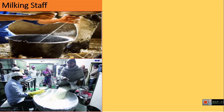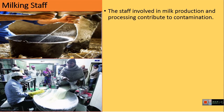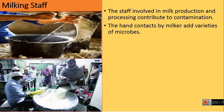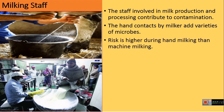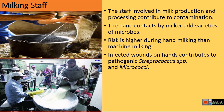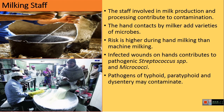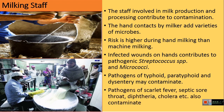The next source of contamination is the milking staff. Staff involved at different stages of milk production and processing contribute to milk contamination. Hand contact or dislodging of dust and dirt particles by the milker may add a variety of microorganisms to the milk. The risk of contamination from the milker is higher during hand milking than machine milking. Milkers with infected wounds on their hands contribute pathogenic Streptococci and Micrococci. The common pathogens of typhoid, paratyphoid, and dysentery from humans may contaminate the milk. Similarly, pathogens causing scarlet fever, septic sore throat, diphtheria, cholera, etc. also contaminate the milk.